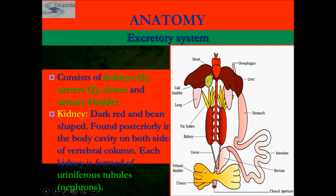Then comes the urinary bladder — this yellow part. The thin-walled urinary bladder is present ventral to the rectum. This is the rectum, and the urinary bladder is present on the ventral side of the rectum, which also opens into the cloaca. So both the ureter and urinary bladder open into the cloaca, which is the outside opening.